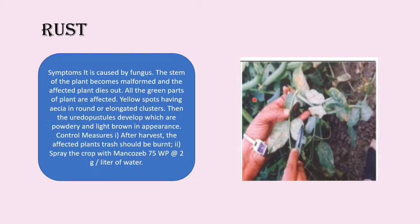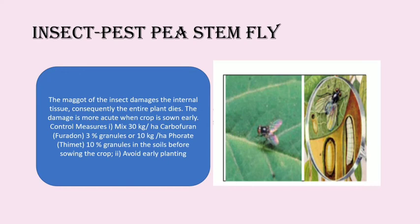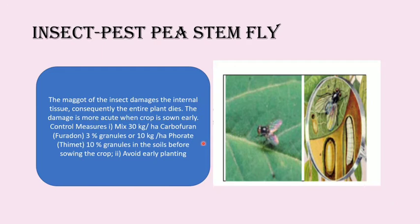Next is the insect pest stem fly. The maggots damage the internal tissue and consequently the entire plant dies. The damage is more acute when the crop is sown early. Control measures include mixing carbofuran (Furadan) at 3% granules at 30 kg per hectare, or phorate 10% granules at 10 kg per hectare in the soil before planting, and avoid early planting.